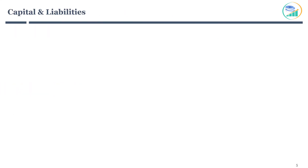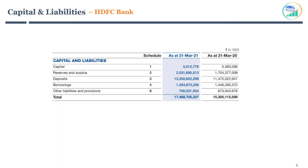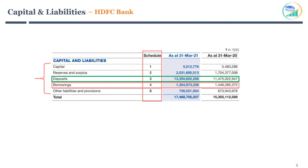Now it's time to move to the capital and liabilities side of the balance sheet for HDFC Bank. Here is how the capital and liabilities side looks — it shows all the liabilities that the company owes. The schedule to the financial statement helps clarify the breakup of each line item. Reviewing individual schedules in the annual report will help you understand the details of liabilities. I will review deposits and borrowings in detail, as they form the biggest portion of liabilities on the balance sheet.